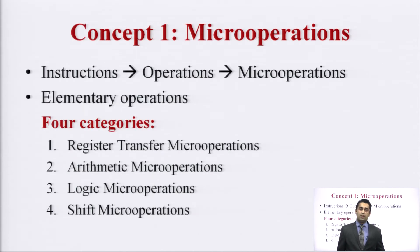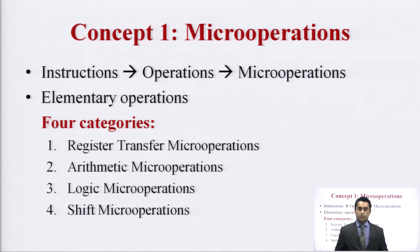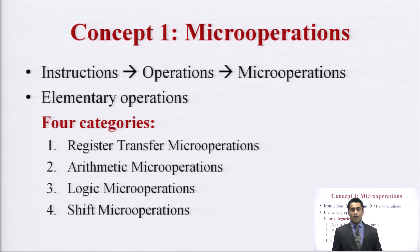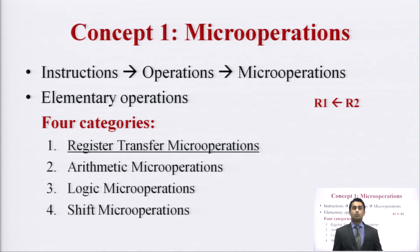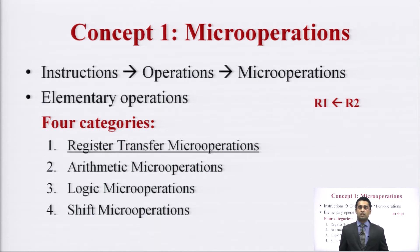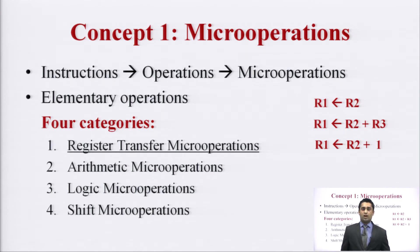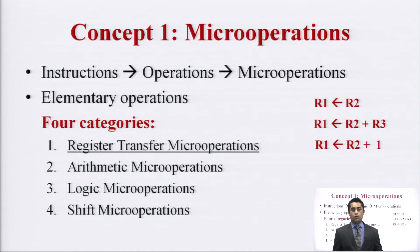To study the ALU, we need to understand three prerequisite concepts. The first concept is micro operations. I generally give an instruction to the CPU, and the CPU divides that instruction into operations and then into micro operations, which are the elementary part. Micro operations are of four types: register transfer micro operations, where a register sends data to another register; arithmetic micro operations; shift micro operations; and logic micro operations. The remaining three types are discussed in unit two.